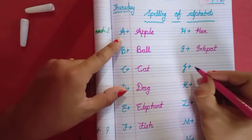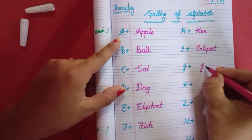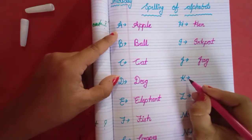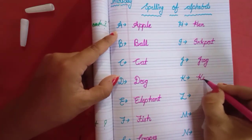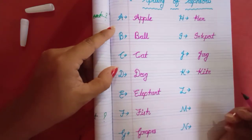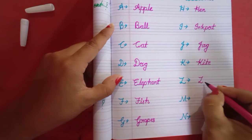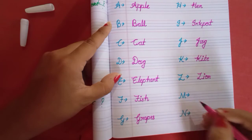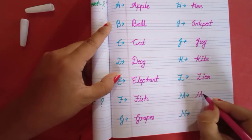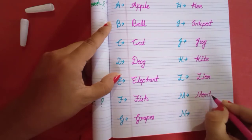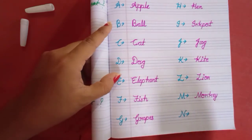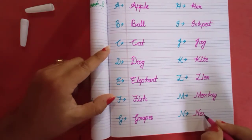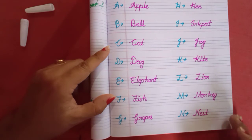J for joker. J for jug. J U G jug. K for kite. K I T E. Kite. L for lion. L I O N. Lion. M for monkey. M O N K E Y. Monkey. N for nest. N for nose. N E S T. N for nest.